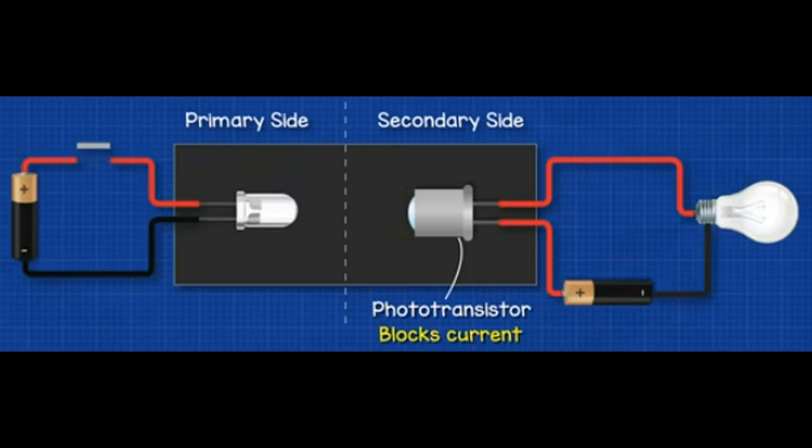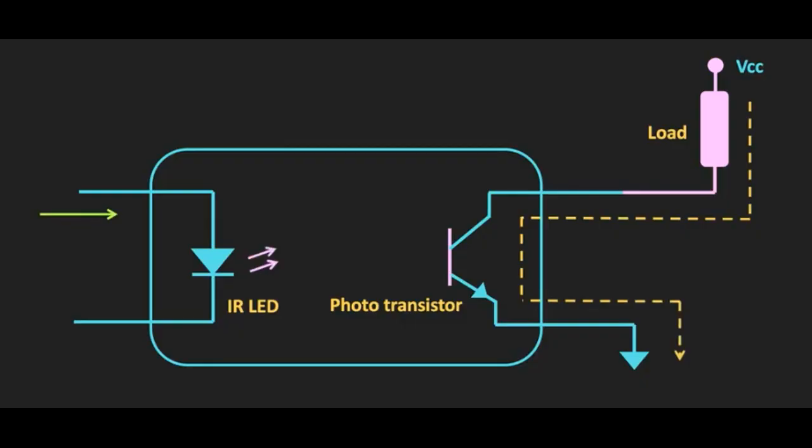Let's understand how this optocoupler works. At one side there is an infrared LED. On other side there is light sensitive device which detects the lights which emits from LED.